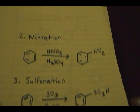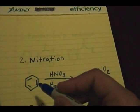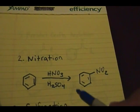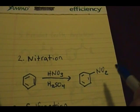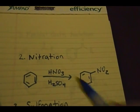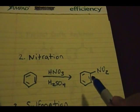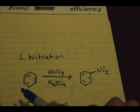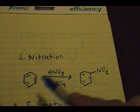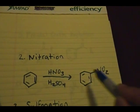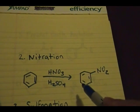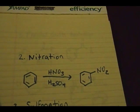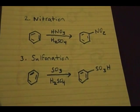The next reaction is nitration. The aromatic ring reacts with HNO3 and H2SO4 to give an aromatic ring with an NO2 group. Since the starting aromatic ring has no substituents to direct positioning, the NO2 will not discriminate between carbons — it could attach to any of them.